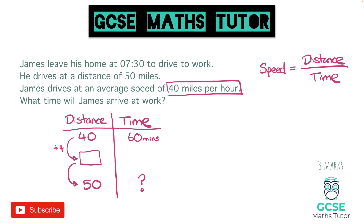Even though I've spotted something that works — divide by 4, we get 10 — we need to work on the right-hand side as well. Can we divide 60 by 4? Yes, we can. 60 divided by 4 gives us 15 minutes. For anyone thinking about the proportional idea here: the extra 10 miles is a quarter of that distance, so it would be an extra quarter. Essentially, we have divided by 4 and found what a quarter of that distance would be.